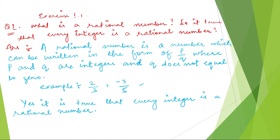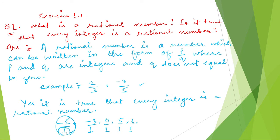You may ask how every integer is a rational number. Take any integer, like minus 2. Integers can be negative numbers, positive numbers, or 0 — such as minus 3, 0, 5, 6, 1, 2, 3, 4. All these are integers. You can write any integer with denominator 1. Since 1 is not equal to 0, and both the numerator and denominator are integers, every integer written as n by 1 satisfies P by Q form. Therefore, every integer is a rational number.